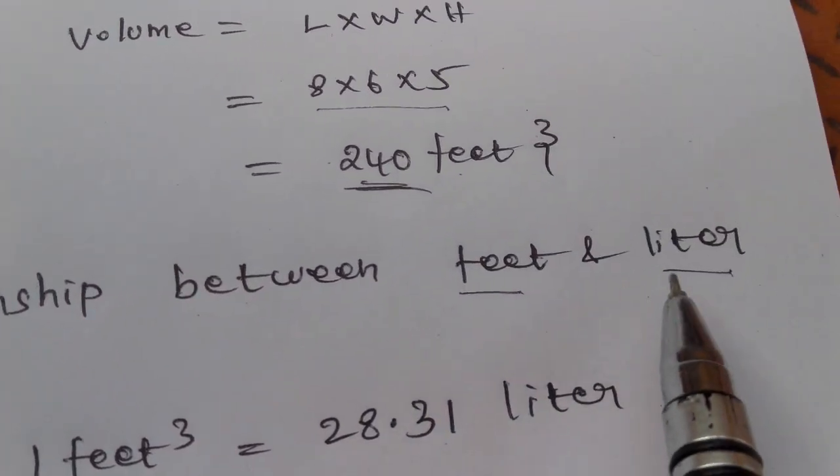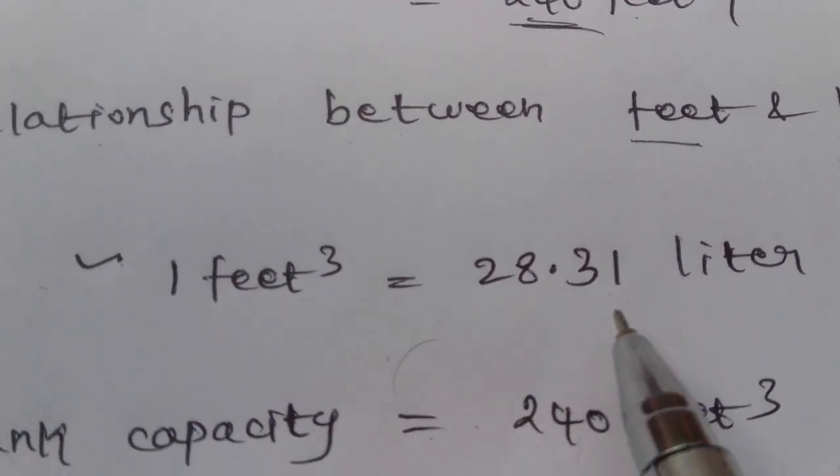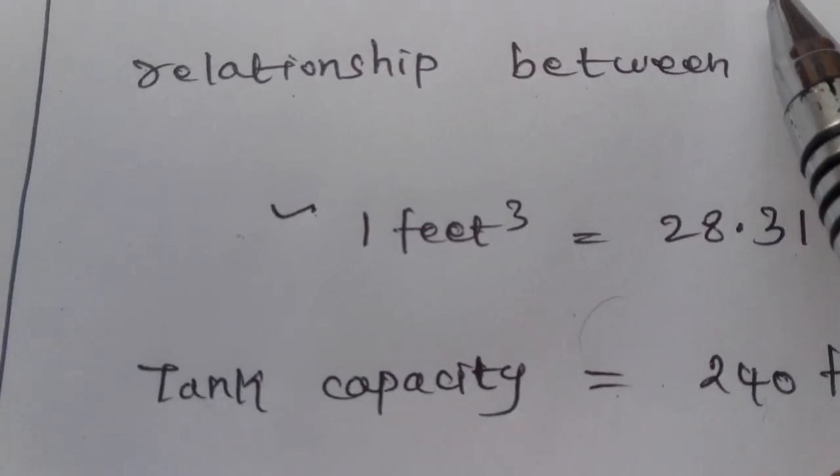The relationship: 1 feet cube is equal to 28.31 liters. There is 240 feet cube.